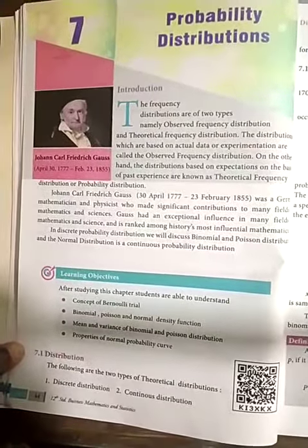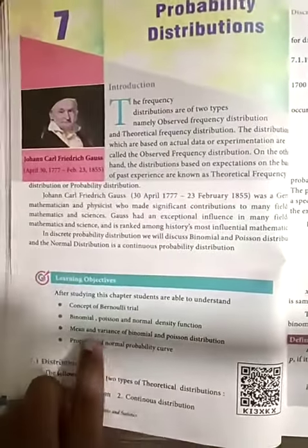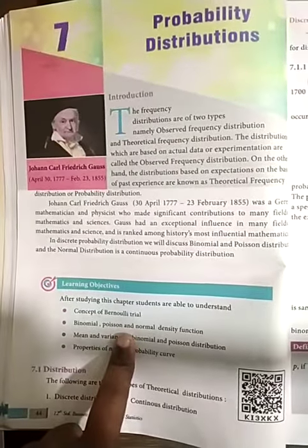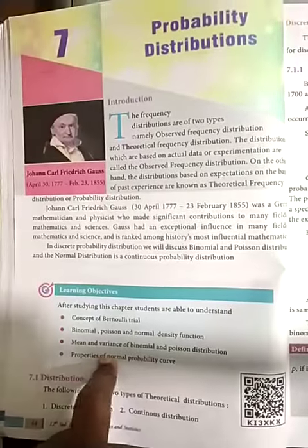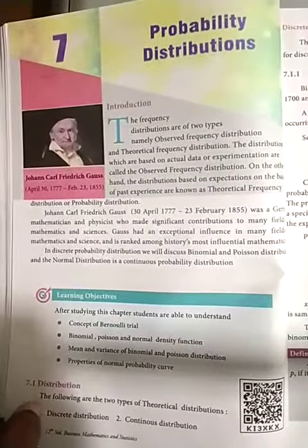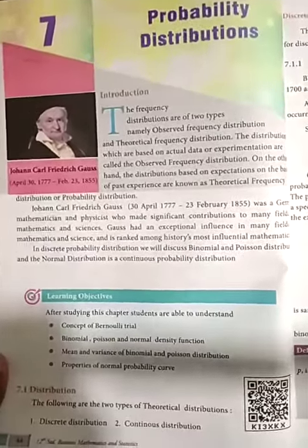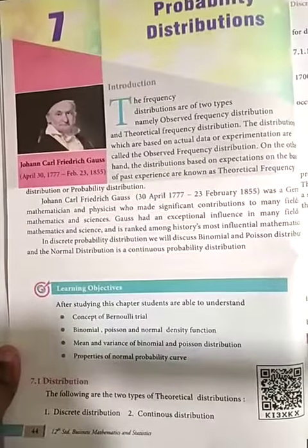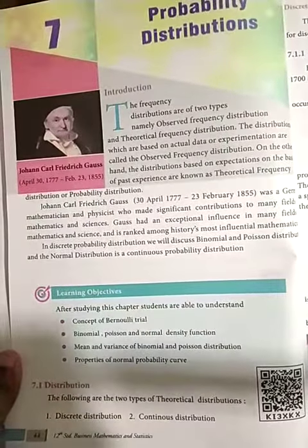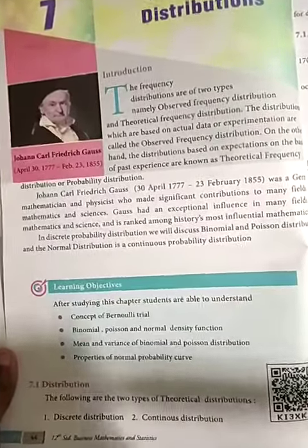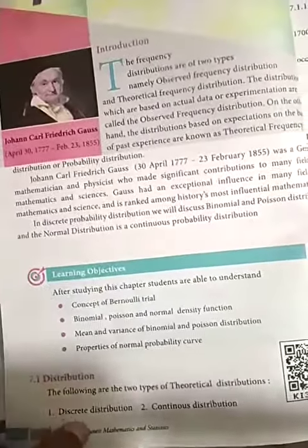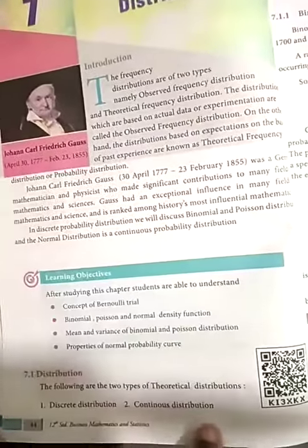Now, the binomial and Poisson distributions will deal with discrete distribution. Discrete means it will be a step function — binomial and Poisson distributions will be handling discrete probability functions, whereas the normal distribution will deal with the continuous function. So we have two types of distributions: discrete distribution and continuous distribution.